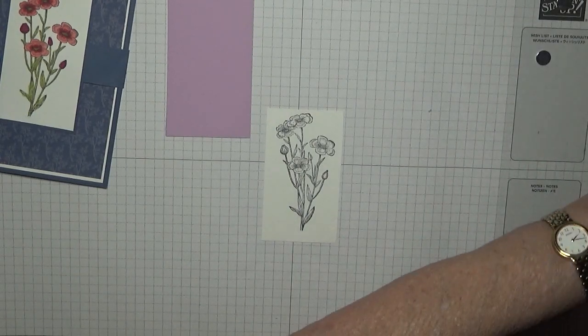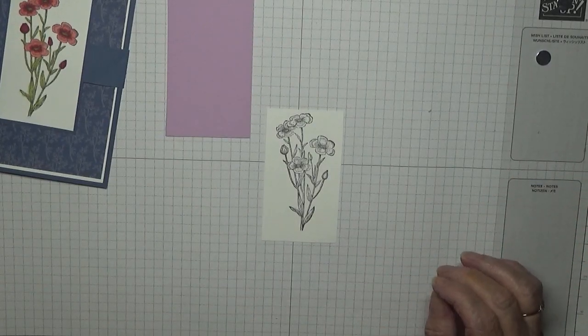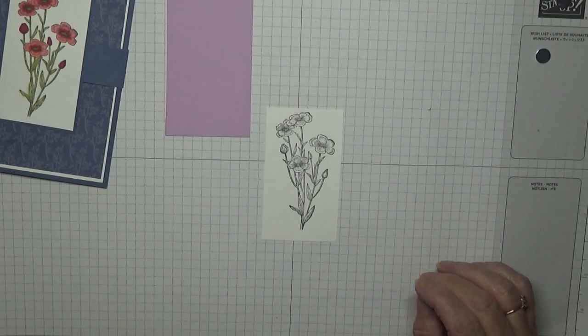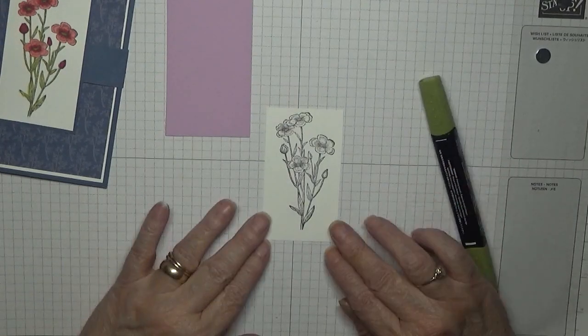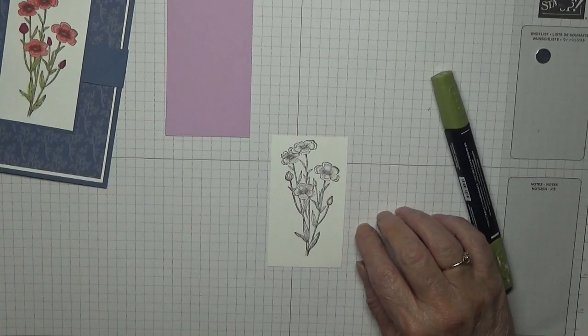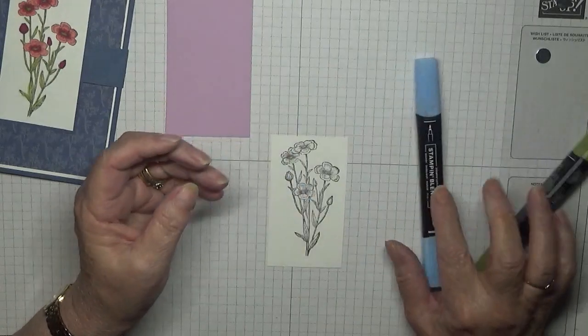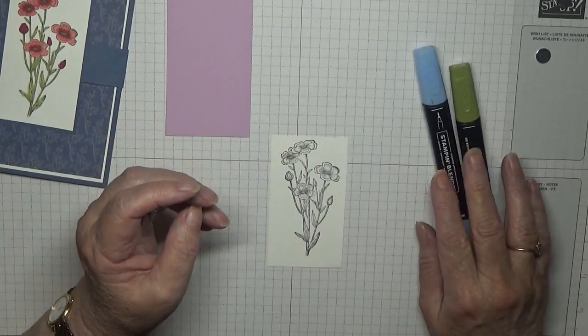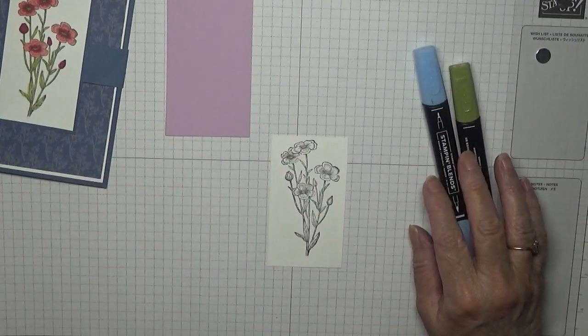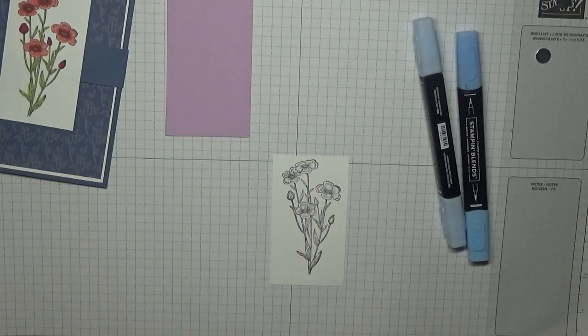Right, we just need some pens out but we definitely need a green and let's do blue. So we've got Seaside Spray and I like Seaside Spray, so I'll do the Old Olive first.